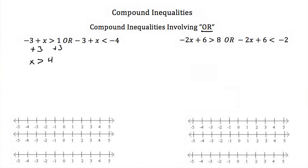We add 3 to both sides, and we'll get x has to be greater than 4. If we plot that on a number line, we go to 4, put an open circle because this is a greater than, not greater than or equal to, and shade everything to the right. That would be the solution for our first condition of our compound inequality.